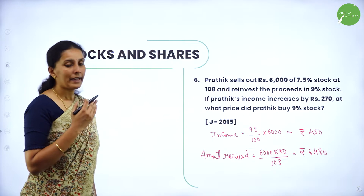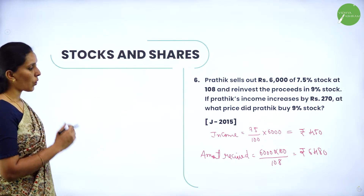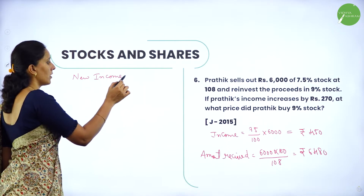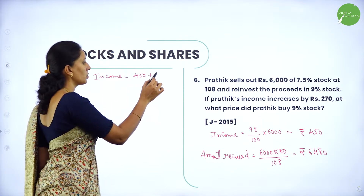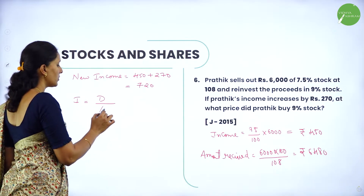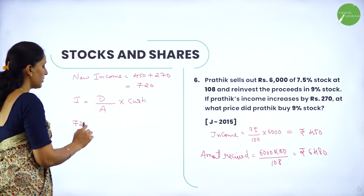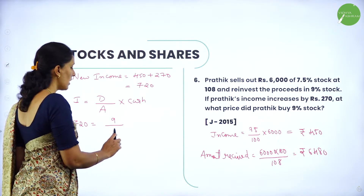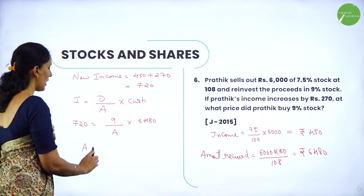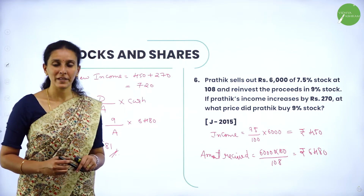His old income was Rs.450. After reinvesting, his new income = 450 + 270 = Rs.720. Using income = dividend / amount × cash: 720 = 9 / amount × 6480. Solving this, amount per share = Rs.81. Therefore, the stock price was Rs.81.